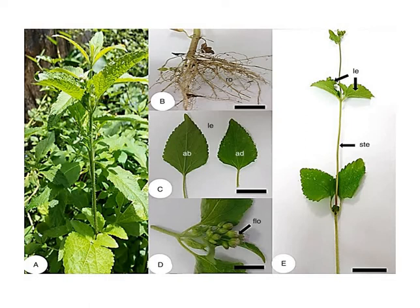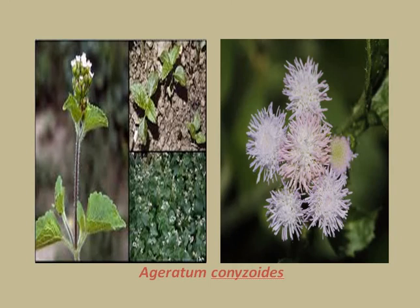The species reproduces mainly by seed, which are dispersed on the hair of livestock and wild animals, clothes, and agricultural machinery. It can complete its life cycle in less than two months. The seeds germinate in response to light and are often no longer visible within 12 months.